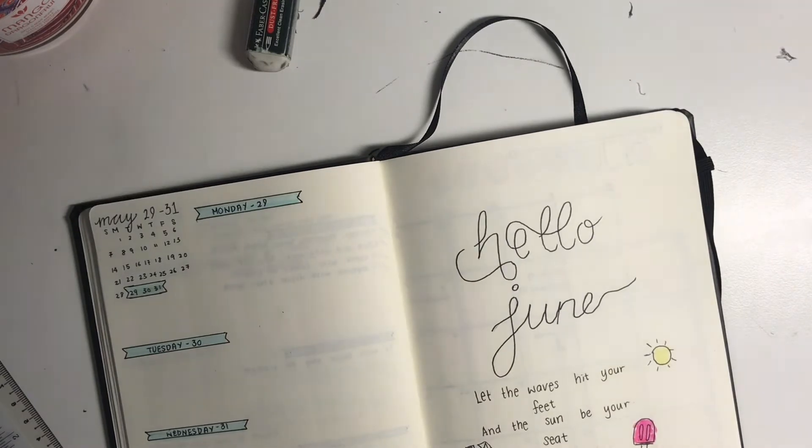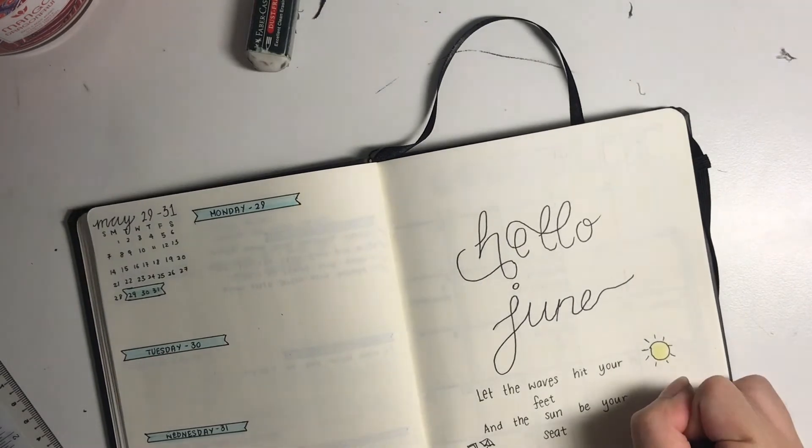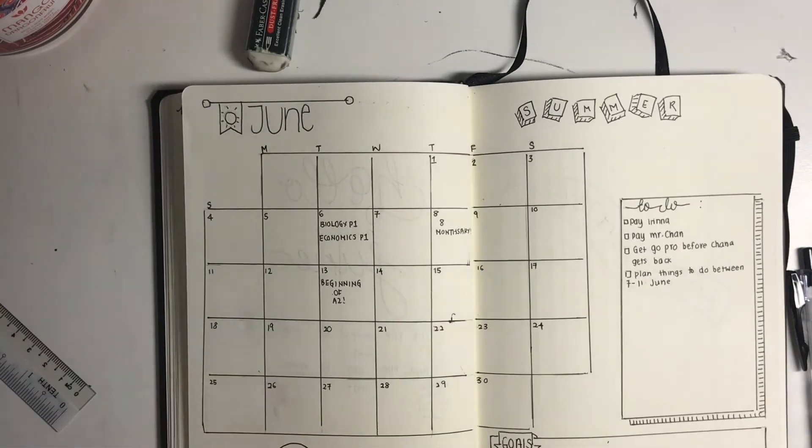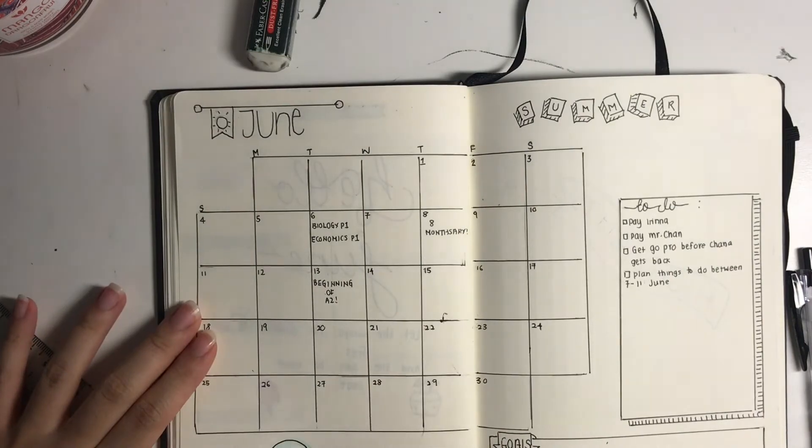And then I went back and I shaded in any other colors, giving it some bright pops of color because, you know, like I said, summer - so yellows, pinks, blues, basically anything.